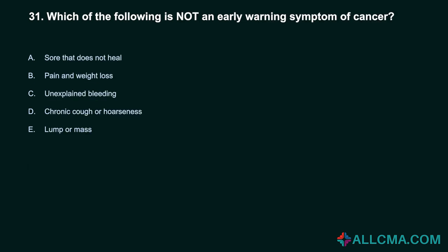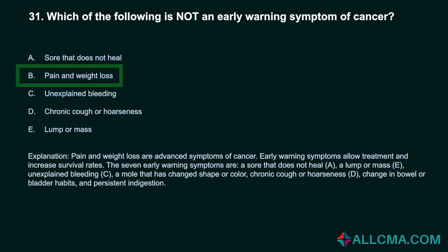Question 31: Which of the following is not an early warning symptom of cancer? A. Sore that does not heal. B. Pain and weight loss. C. Unexplained bleeding. D. Chronic cough or hoarseness. E. Lump or mass. Correct answer: B. Pain and weight loss. Pain and weight loss are advanced symptoms of cancer. The seven early warning symptoms are: a sore that does not heal, a lump or mass, unexplained bleeding, a mole that has changed shape or color, chronic cough or hoarseness, change in bowel or bladder habits, and persistent indigestion.